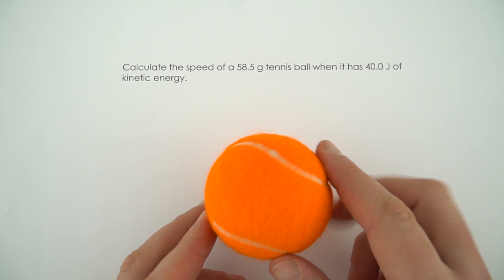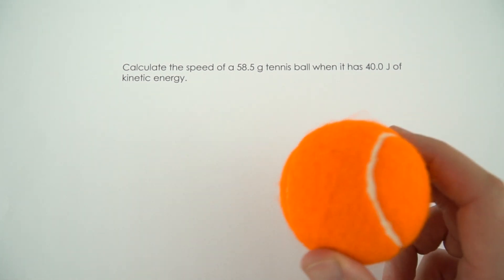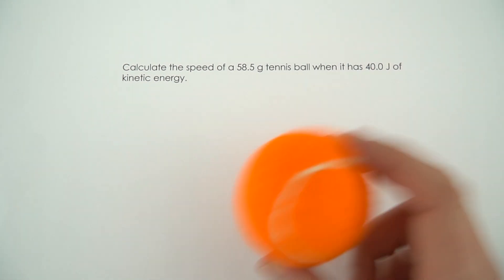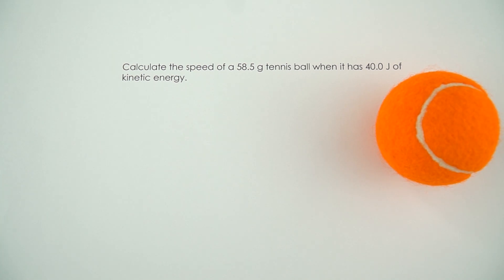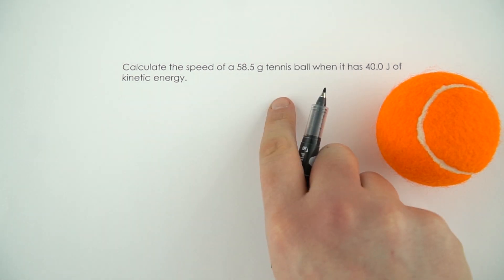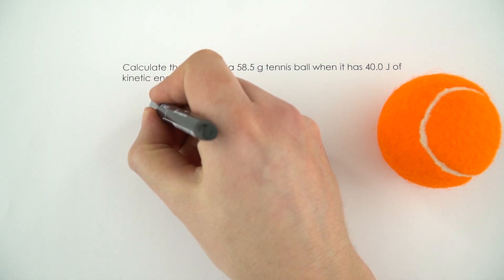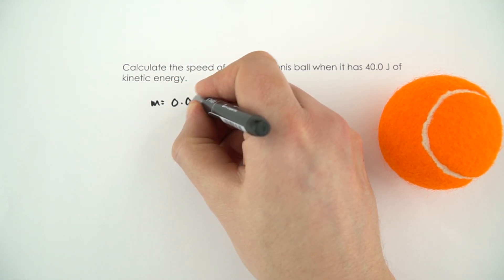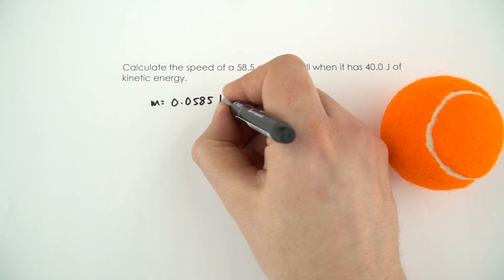Now in this example we've got a tennis ball and we know how much energy is stored in the kinetic store, but we don't know how fast it's actually travelling. So the first thing I'm going to do is just write down what I know from the question here.